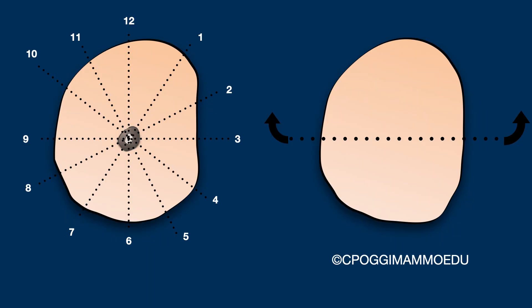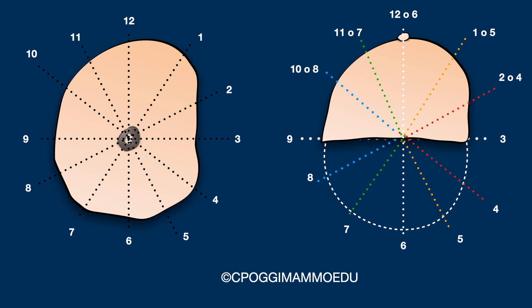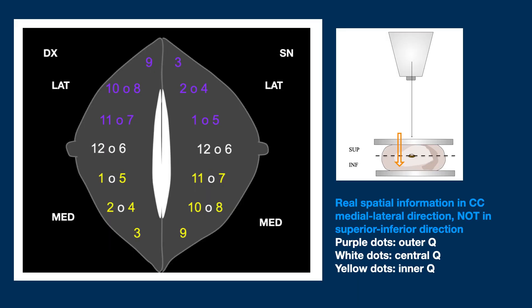Let me show you a very simple animation on how you can switch from the coronal view to the CC layout. The image is folded on the line during 3 and 9 o'clock on itself, creating an overlap of superior and inferior quadrants. I know for certain that the purple dots are located in the outer quadrant, the white ones in the central, and the yellow ones in the inner quadrant, but I cannot say if they are located in the upper or lower quadrant.